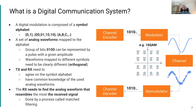The modulation is composed of a symbol alphabet. As one example, a 16-QAM diagram contains symbols with different amplitudes — depending on their position they transmit a different symbol, and each symbol consists of four bits. It is important to mention that the transmitter and receiver need to agree on the symbol alphabet, so they know how to extract the modulated information and have common knowledge of the analog waveforms used. The receiver also needs to find the analog waveform that most closely resembles the received signal, a process called matched filtering.